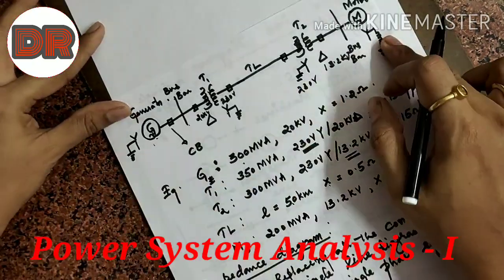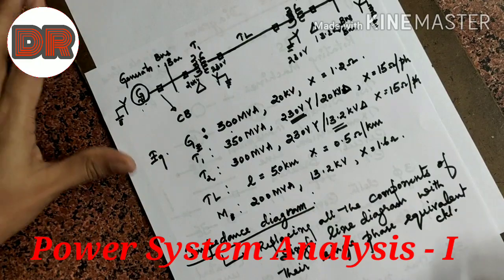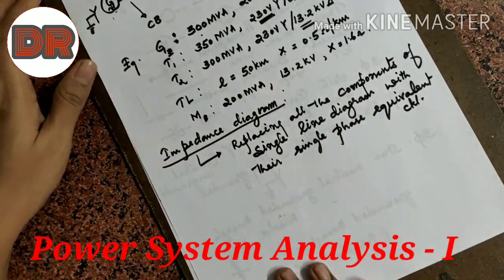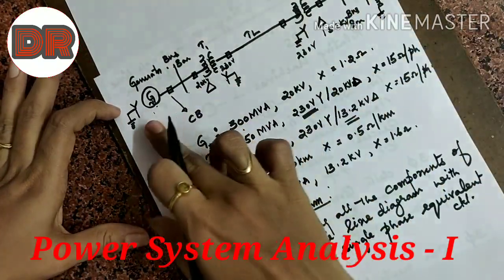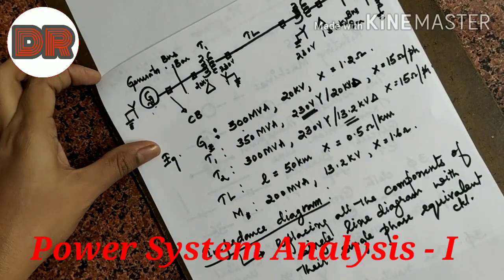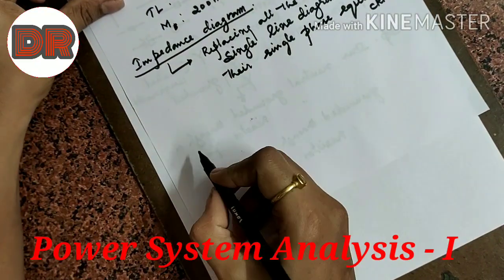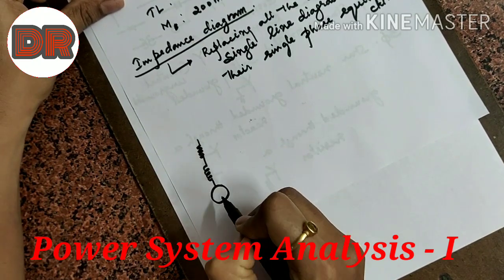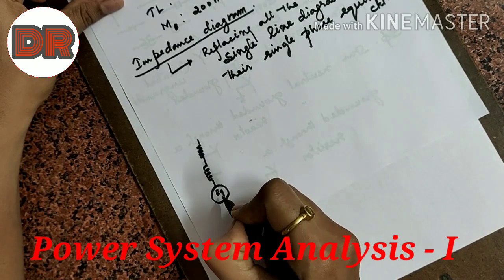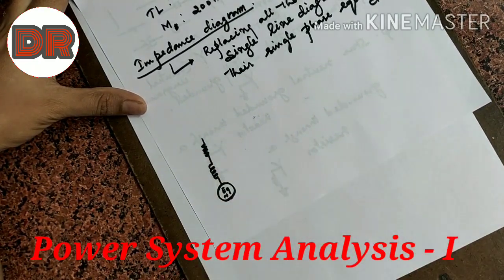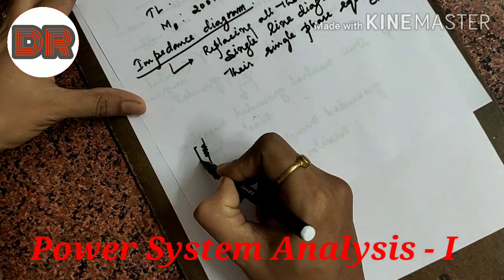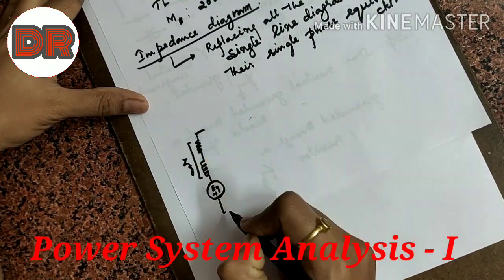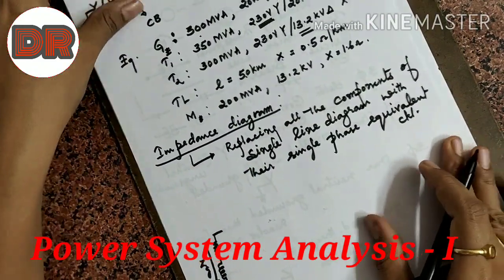For the same single line diagram, let us write the impedance diagram using the single phase equivalent circuit concept from the previous video. In the single line diagram the first element is the generator. Its single phase equivalent circuit is a voltage source EG in series with the generator impedance ZG.